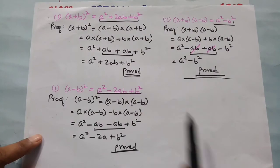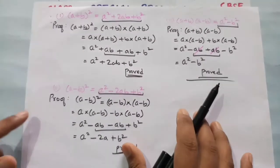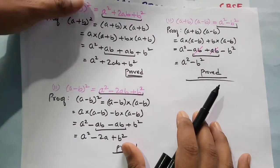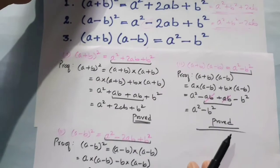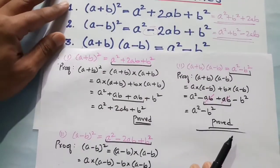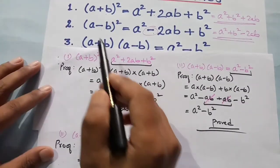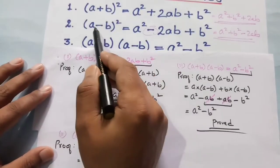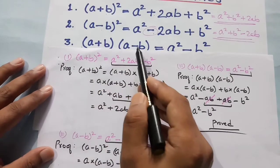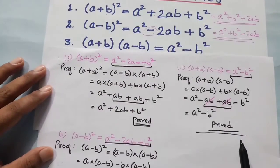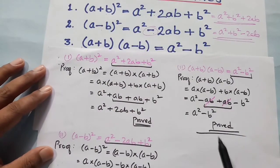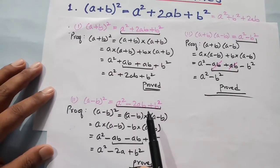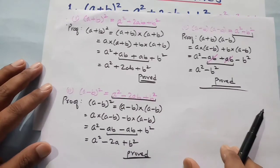So we have proved all three identities. These three identities are: (a + b) whole square, (a - b) whole square, and (a + b)(a - b). All three are now proved.